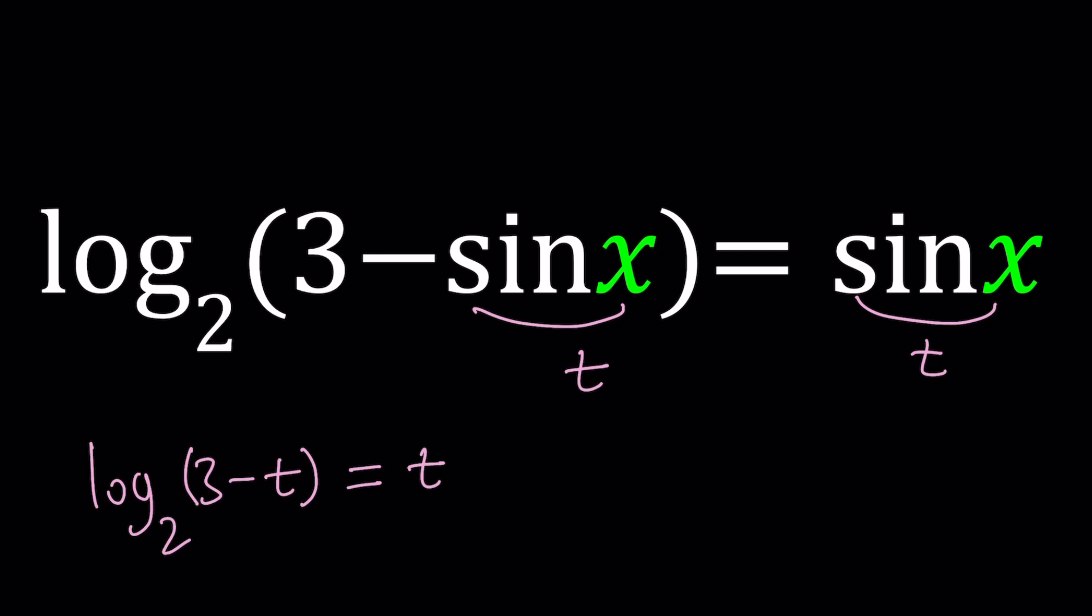If you're using Desmos sometimes it'll be easy to tell or some other graphing calculator online or otherwise. But let's go ahead and do this. Use the definition of logarithms. And what is the definition of logarithms? It tells us that you start at the base, go across, 2 to the power t and then you get this as a result. In other words we're asking the question 2 to the power what number equals 3 minus t and the power would be t in this case.